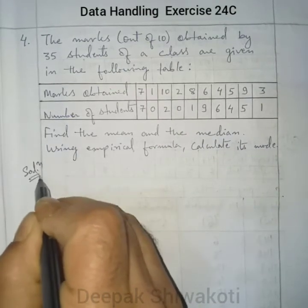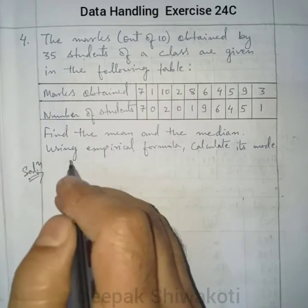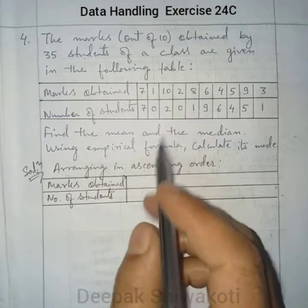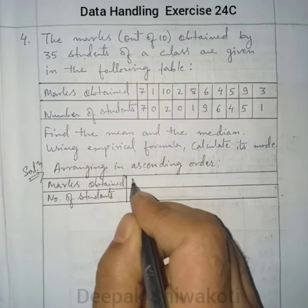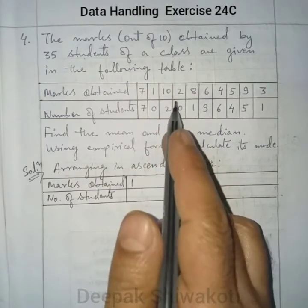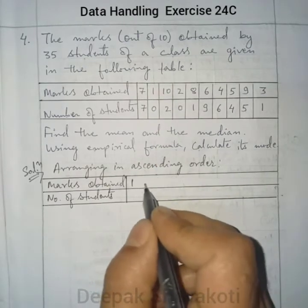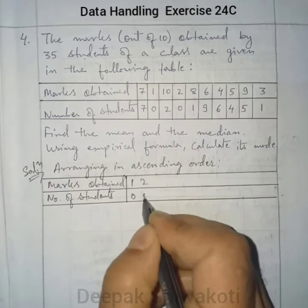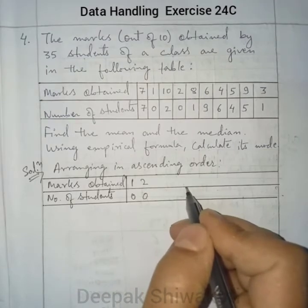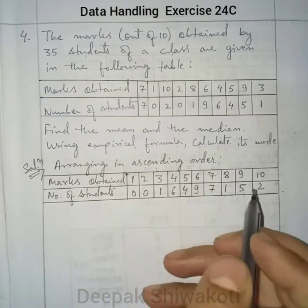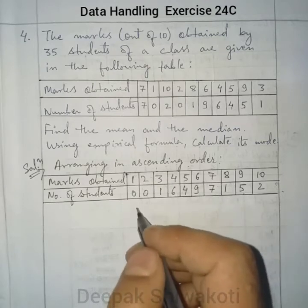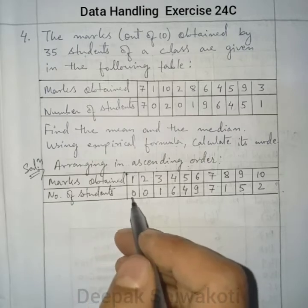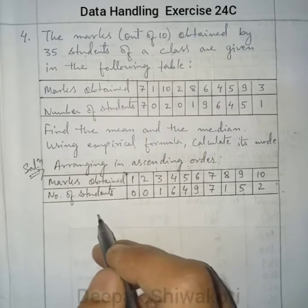Solution: arranging marks in ascending order in a new frequency distribution starting from 1 to 10. For marks 1 and 2, the number of students is 0. Mark 3 has 1 student, and so on. We then prepare another table with columns: marks obtained, number of students (fi), cumulative frequency, and fi·xi.